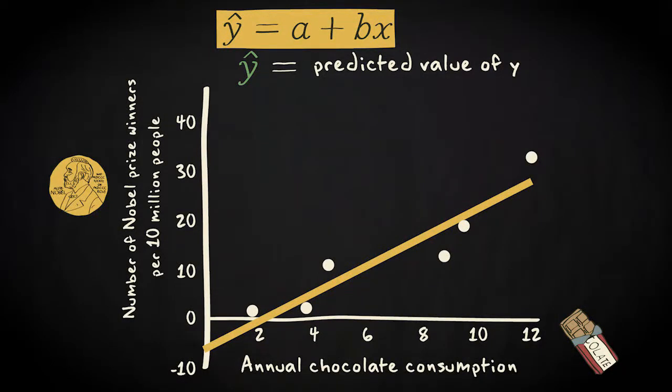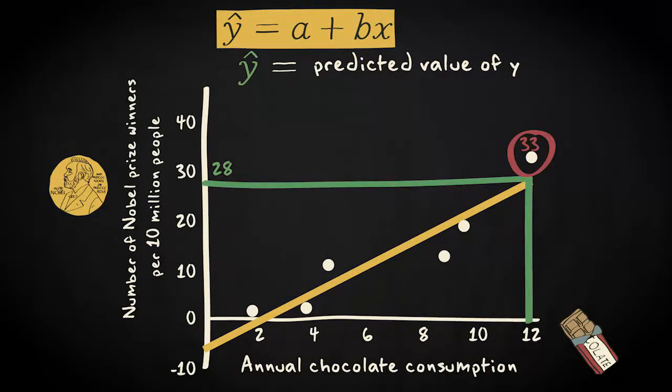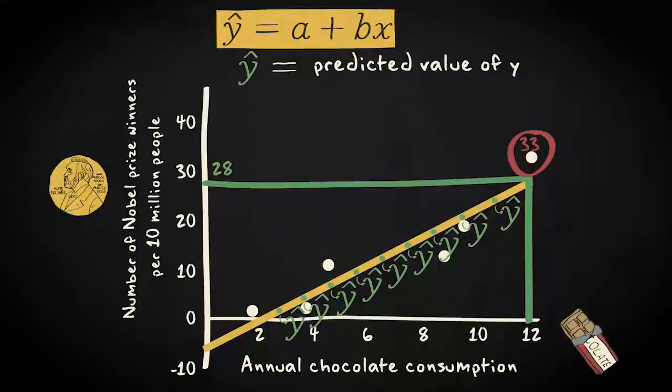For example, when x equals 12, y hat equals 28. Notice that the actual value of y in this case is 33. However, the predicted value of y is the value of y on the regression line. This means that all the values exactly on the regression line are y hats.